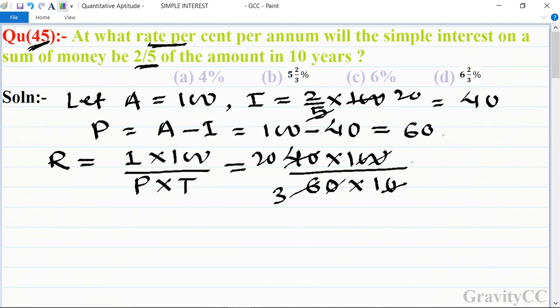So it is equal to 20/3, which is equal to 6 and 2/3 percent per annum, which is the required answer. Second method.